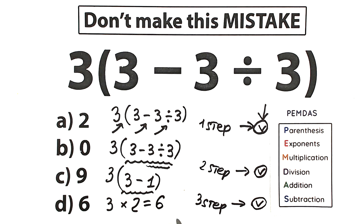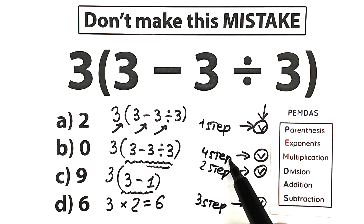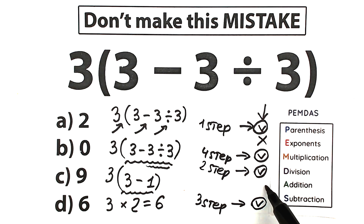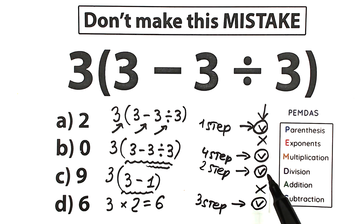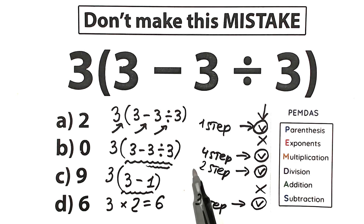And our answer is 6 — right here we have multiplication, so multiplication is our fourth step in this challenge. We skip exponents and addition since we don't have those here. To summarize: step one is parentheses; step two is division inside the parentheses; step three is subtraction; and step four is multiplication. We get 3 times 2 equals 6.